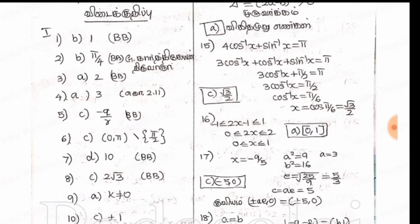As you can see the other questions, I know if you can do this. Ok friends, now the fourth one is A, 3. The fifth one is C, minus Q by R.